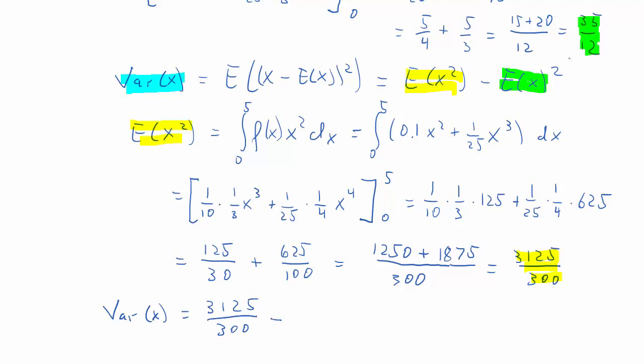3125 over 300 minus the expected value squared. And now, this is now calculator work. So get out your calculator and confirm that the result here is 1.9097. So that's the variance of X.